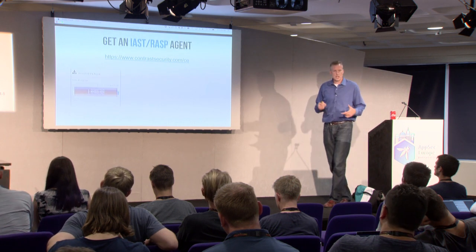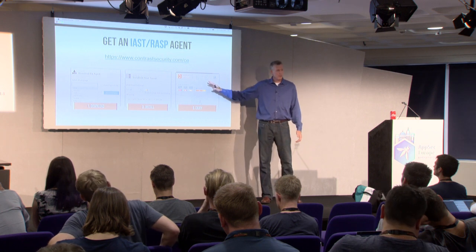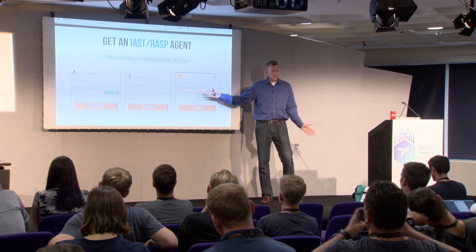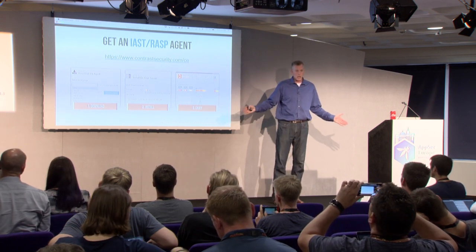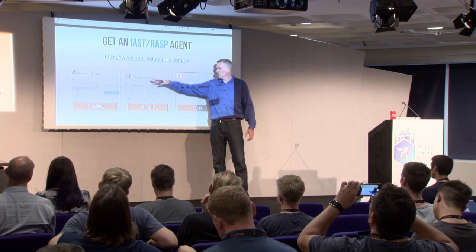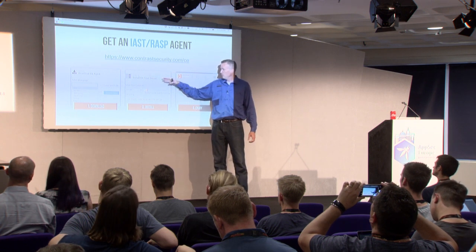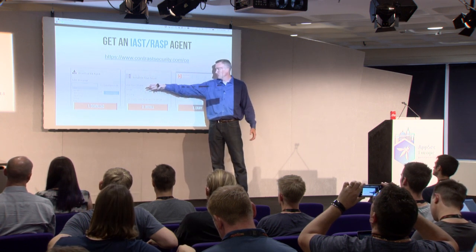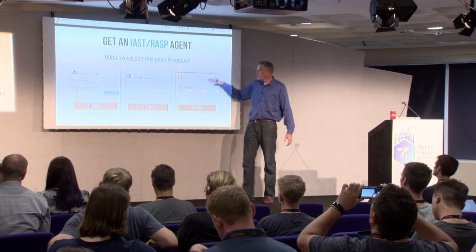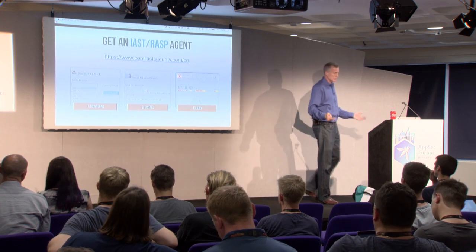Today we're going to use IAST and RASP agent from Contrast — that's my company. This is our community edition; it's free for everyone — go sign up and get started. You're free to use whatever IAST and RASP technology you want, this is a generic talk. To use this, you sign up, get an account, log in, download the agent. We'll be doing Java examples, so you download the JAR file — standard Java stuff. Drop it in on your application server, and you're off to the races.